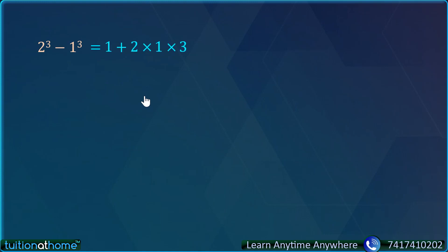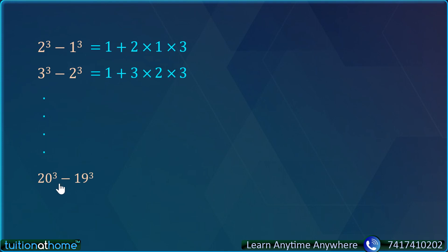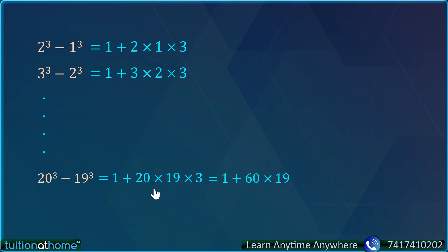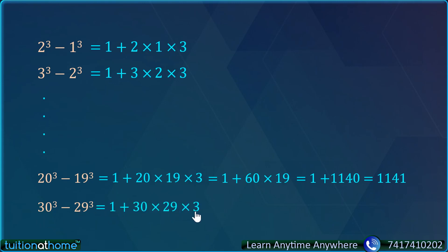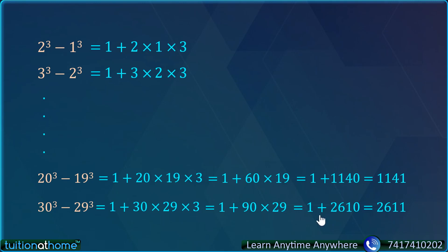So 2 cube minus 1 cube = 1 plus 2 into 1 into 3, and 3 cube minus 2 cube = 1 plus 3 into 2 into 3. Using this pattern, we can find 20 cube minus 19 cube very easily: it equals 1 plus 20 into 19 into 3 = 1 plus 60 into 19 = 1 plus 1140 = 1141. Similarly, 30 cube minus 29 cube = 1 plus 30 into 29 into 3 = 1 plus 90 into 29 = 1 plus 2610 = 2611. Because we know the pattern, we found such difficult calculations so easily.